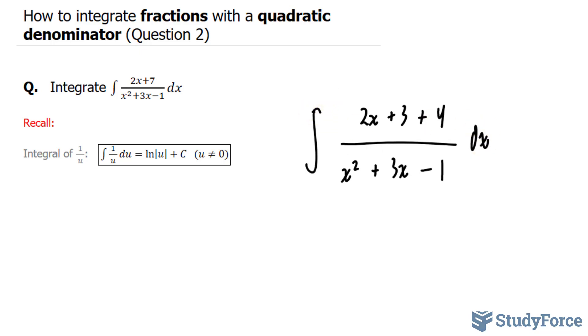The reason why I'm doing this is because in question 1, we had 4 over x to the power of 2 plus 3x minus 1. In other words, we had to integrate the following function. So what we can do is separate this integral into two integrals. We already know the integral of 4 over x to the power of 2 plus 3x minus 1. We did that in question 1.